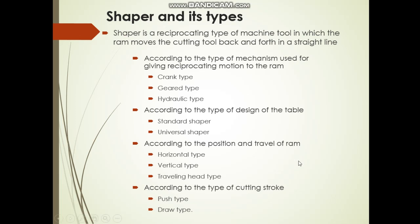According to the position of travel of the ram, we can see horizontal type and vertical type. If the ram's movement is horizontal, it is the horizontal type. If it is vertical, it is the vertical type.